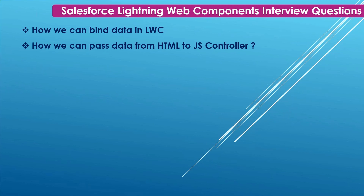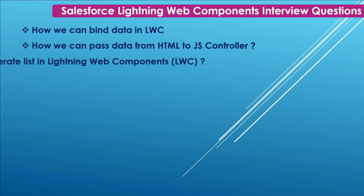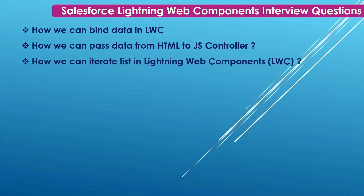Next: How can we pass data from HTML to the JavaScript controller? We can use the onchange attribute to listen for a change to its value. When the value changes, the handler function is called in the JavaScript file. Next: How can we iterate a list in Lightning Web Components? We have two options: for:each and iterator.